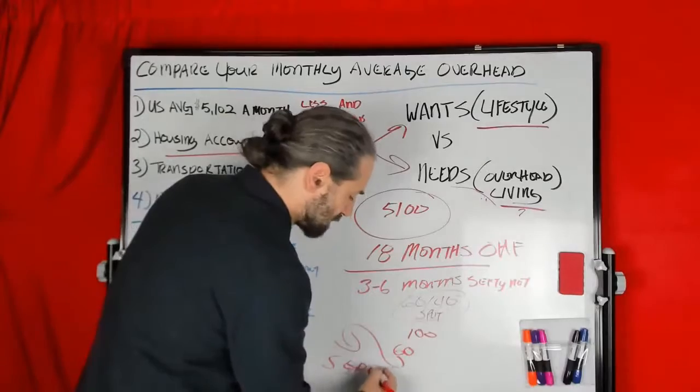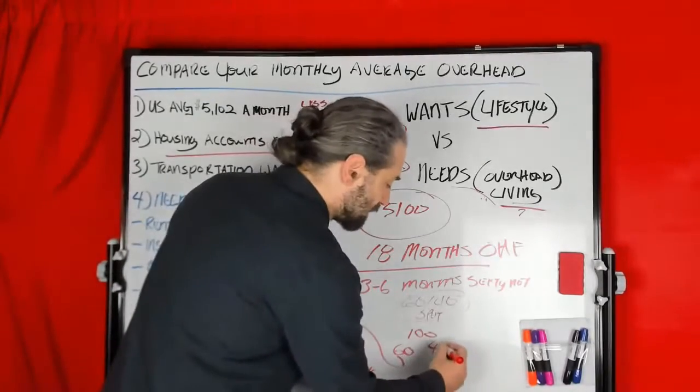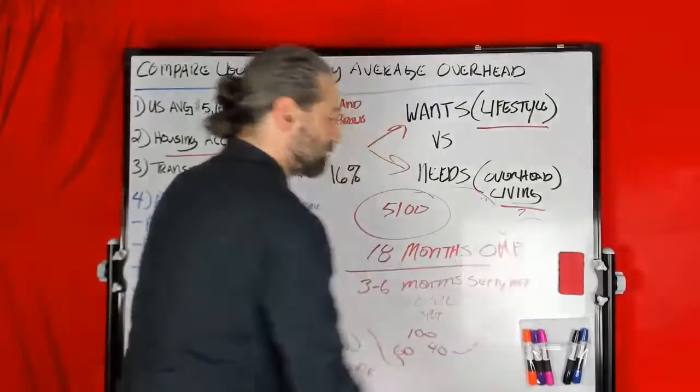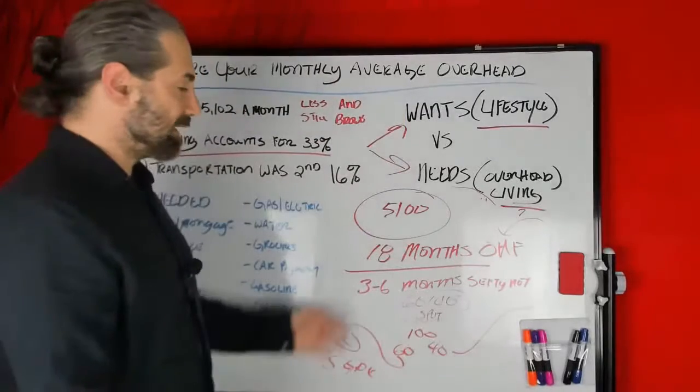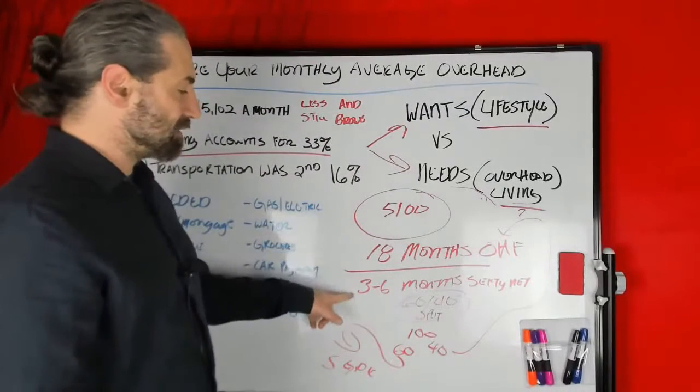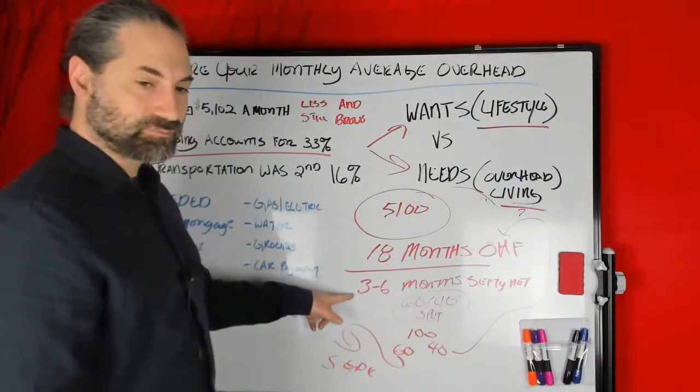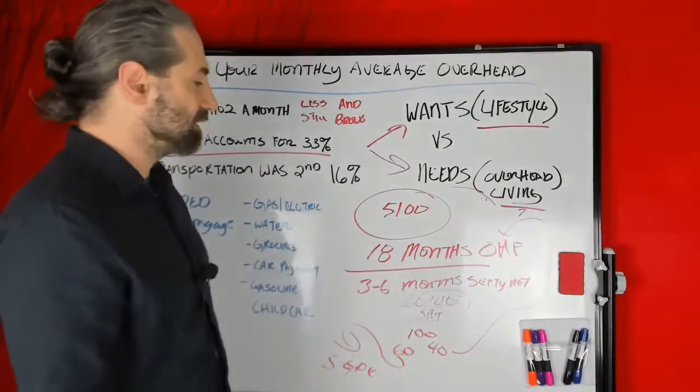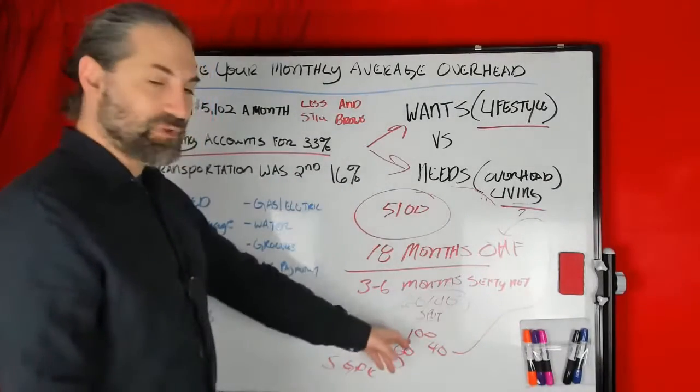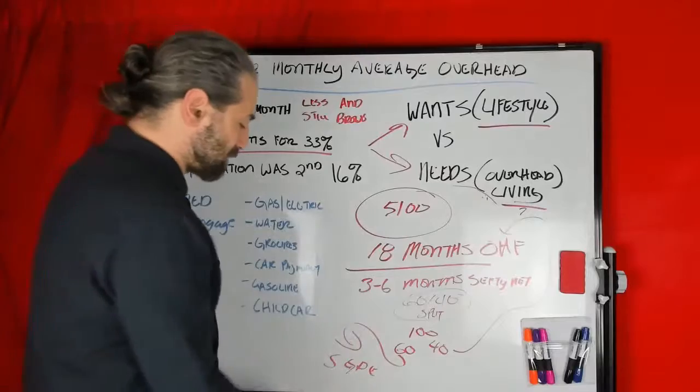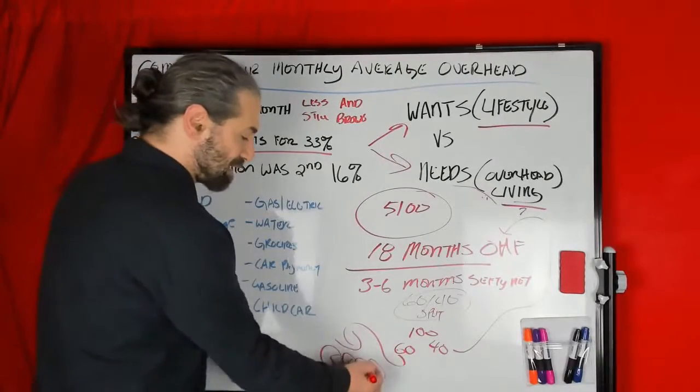You could even put some in emergency fund. And then another $40, you put back into your overhead. So if you have at least three months saved in your overhead foundation, every time you make money, you can start separating. Why do we separate into security, growth, and dream, and emergency?